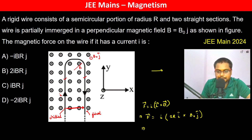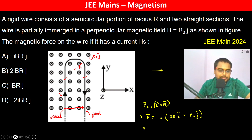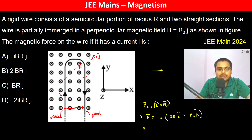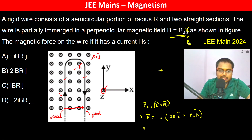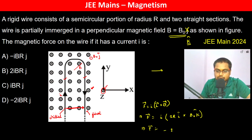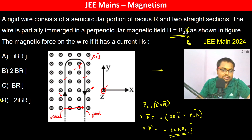Wait — B is actually B₀K̂, not B₀ĵ, because it is pointing in the upward direction (K̂ is upward as marked in the figure). So the force becomes I times 2R î cross B₀K̂. Since î × K̂ = -ĵ, the force becomes -2IRB₀ĵ. This is option D.